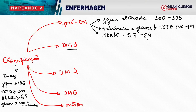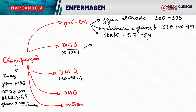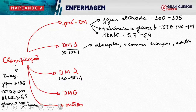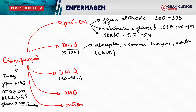O diabetes mellitus tipo 1 é o menos comum — de 5 a 10% da população com diabetes, enquanto o tipo 2 representa 90 a 95%. O tipo 1 tem característica de ser abrupta, acontece de uma hora para a outra. Às vezes o paciente tem uma infecção e depois desencadeia a produção de anticorpos. É mais comum em crianças e adolescentes, mas pode acontecer em adultos — nesse caso recebe o nome de LADA, diabetes autoimune latente do adulto.